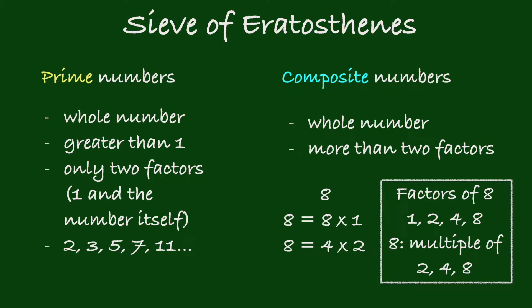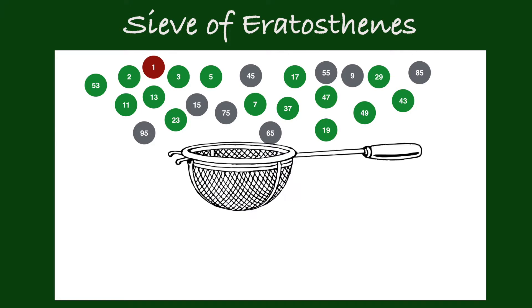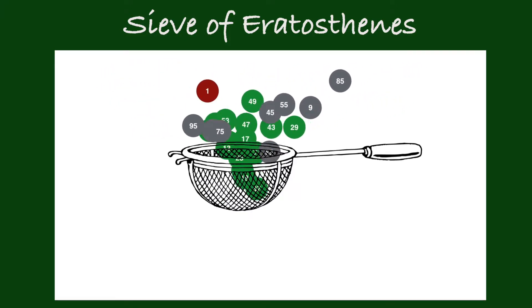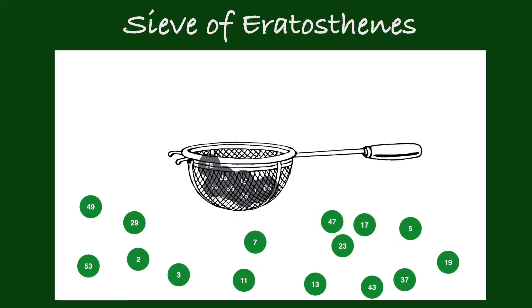Another way to say it is that 8 is a multiple of 2, 4, and 8. The concept of multiples is the key to the secret of the Sieve of Eratosthenes. The sieve works just like what its name suggests — it only lets out prime numbers. Let's work it out now.